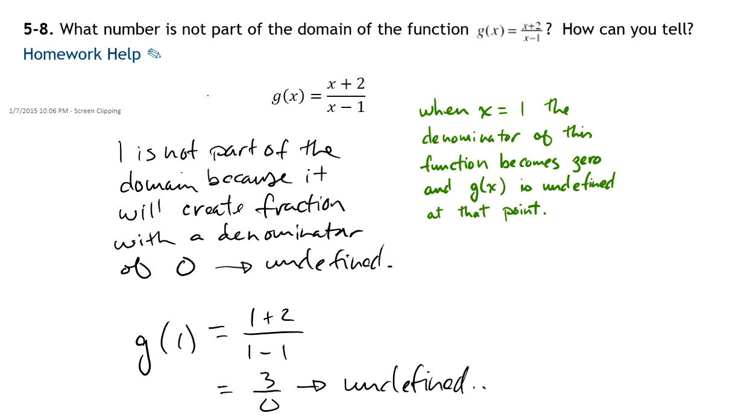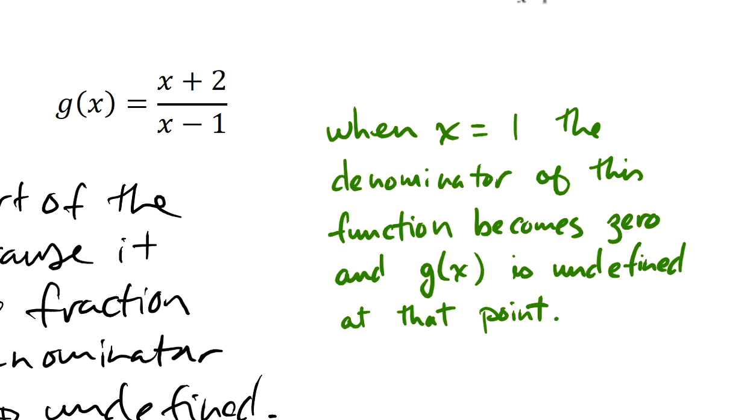Well, what I ended up writing was, when x equals 1, the denominator of this function becomes 0, and g of x would be undefined because it's a division by zero error. So I know that x equals 1 is a clear restriction on my range—I'm sorry, on the domain. It's not something that can go into the domain of that function. It's not part of the domain because at that point the function is undefined.